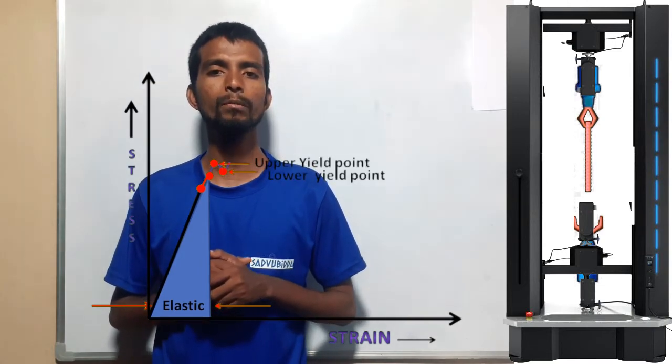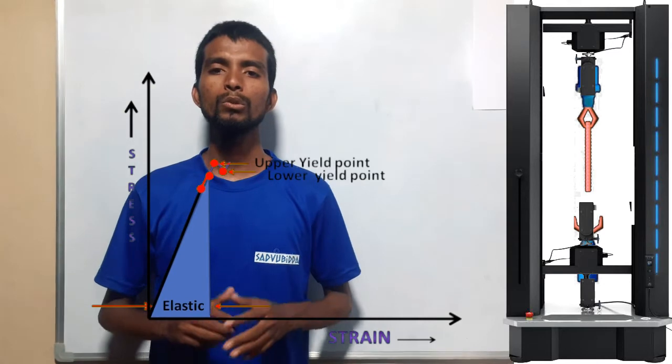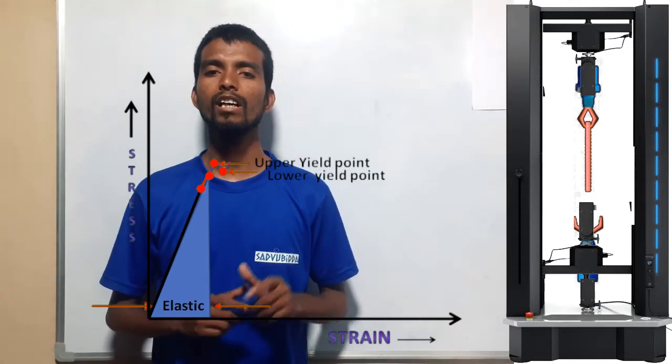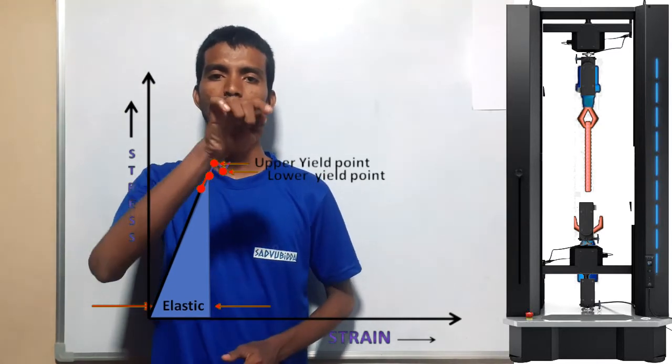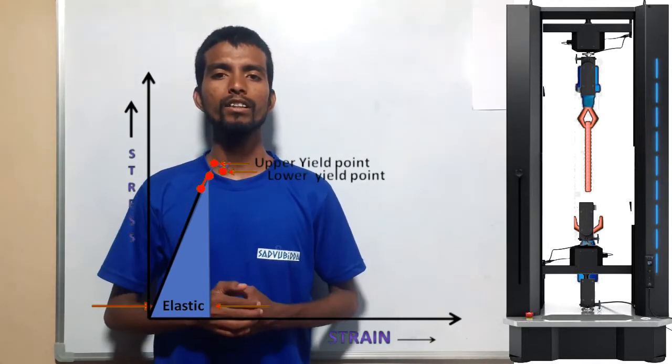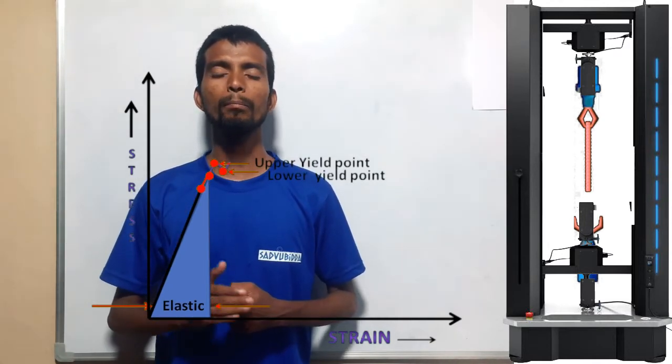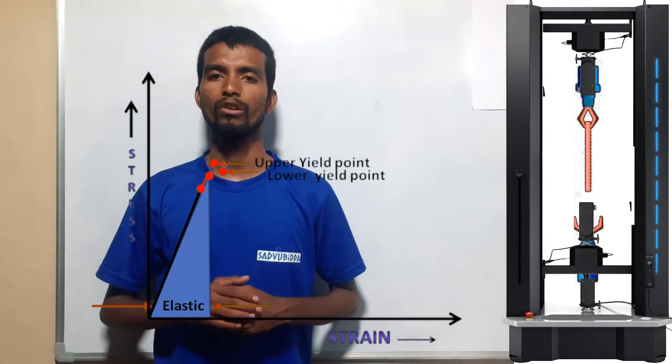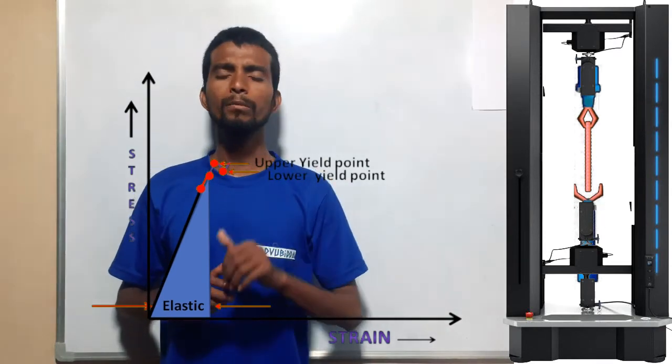This is known as the yield point. We have two yielding points: upper yield point and lower yield point. At the upper yield point, the member enters into permanent deformation zone. At the lower yield point, the member maintains constant plastic deformation.